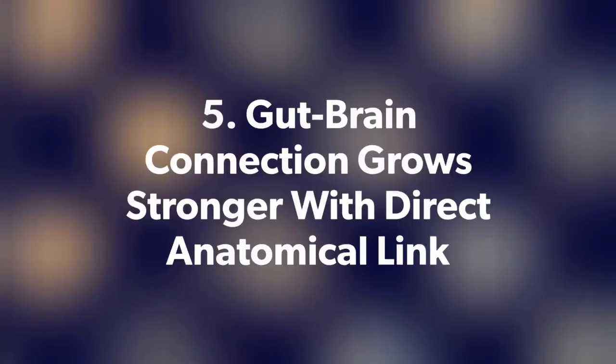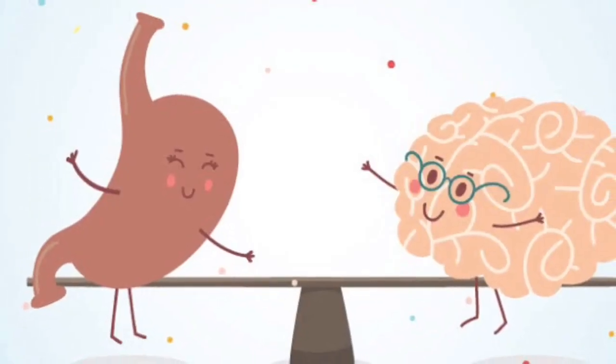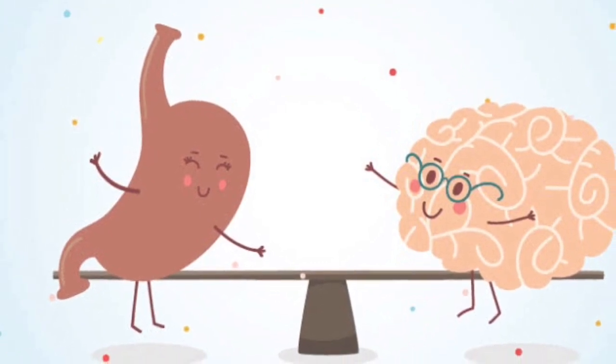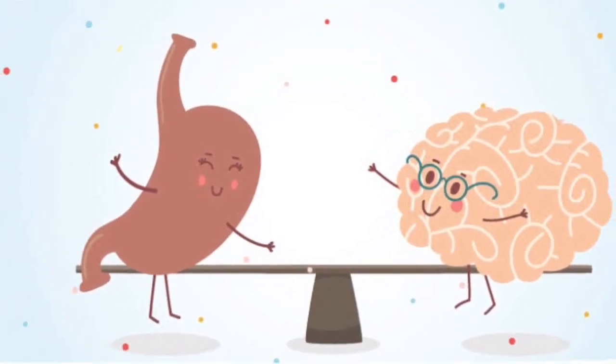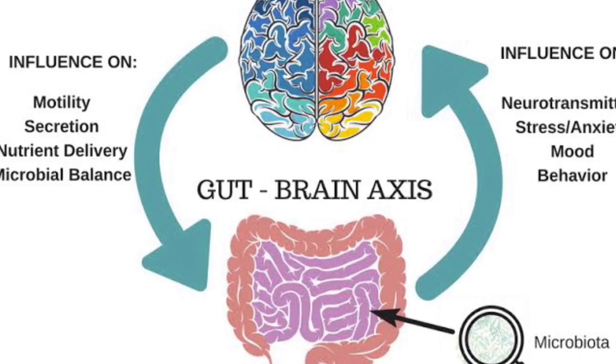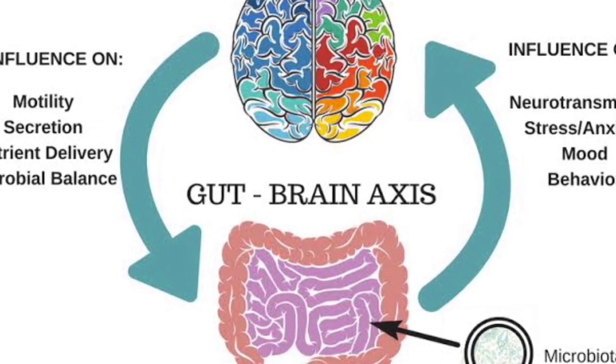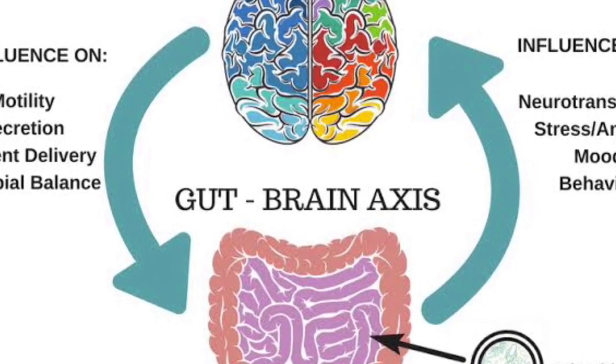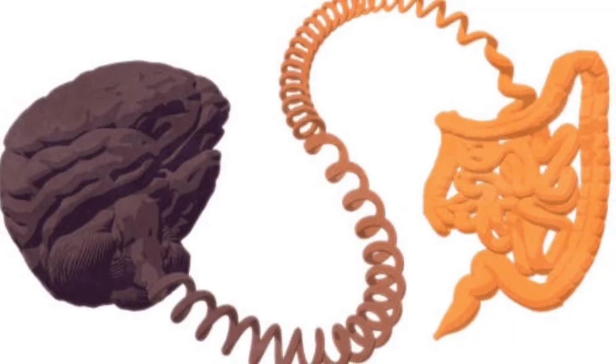Gut-brain connection grows stronger with direct anatomical link. One of the hottest research trends in neuroscience is the link between the brain and the gut, often dubbed the little brain. The human gut is lined with over 100 million nerve cells that allow it to talk to the brain, letting us know when we're hungry or when we've overindulged. But it's not all digestion.